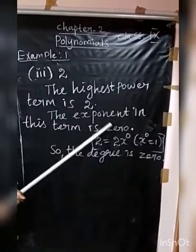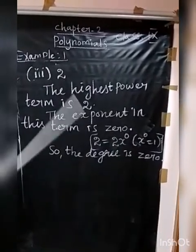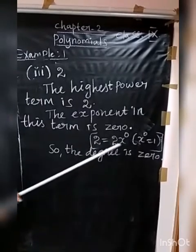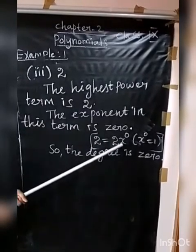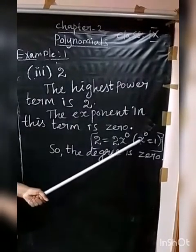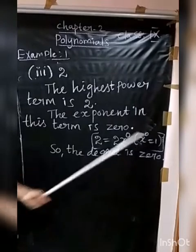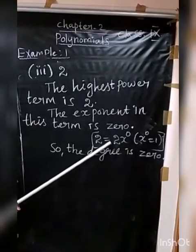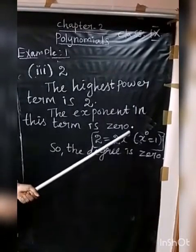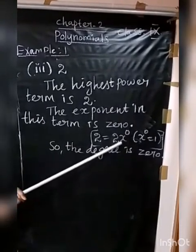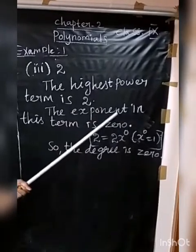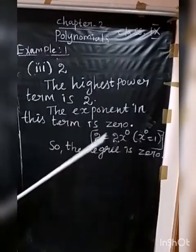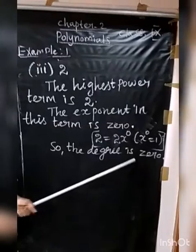The constant 2 can be written as 2 into X Power 0. X Power 0 has value 1, so 2 into X Power 0 equals 2. The exponent is 0, therefore the degree of the polynomial is 0.